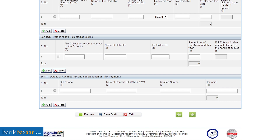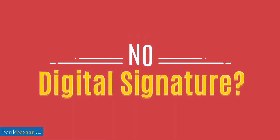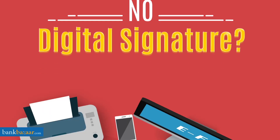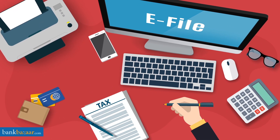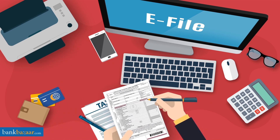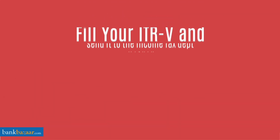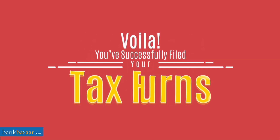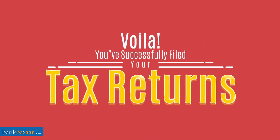Once you're done filling in the details, you can submit the form. If you've downloaded the form, you'll have to upload it in XML format and then submit it. If you haven't opted for a digital verification of your ITR-V, you'll have to download it, fill it, and send it to the income tax office within 120 days. You will receive an acknowledgement for filing your return. Now that you're all wise about e-filing returns, don't miss the deadline ever again!